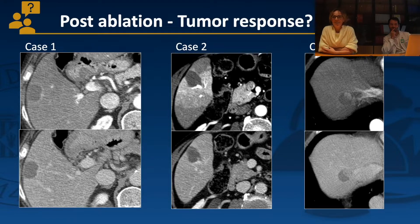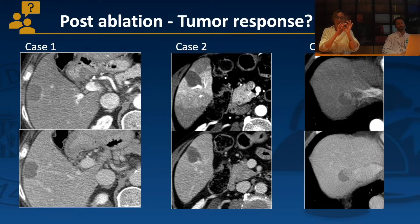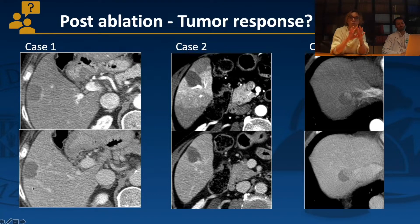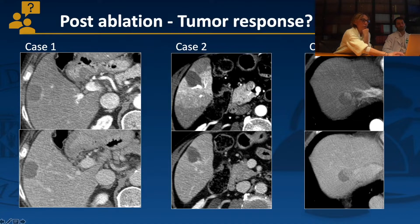Ablation cases: after microwave ablation, a thin rim of arterial enhancement surrounding the ablation zone is commonly seen. This is inflammatory, not tumor, because in the portal venous phase it remains hyperattenuating with no washout — unlike HCC which washes out. In a second case, a large enhancing area around the ablation zone in arterial phase also shows no washout in the portal phase, suggesting it is not tumor.